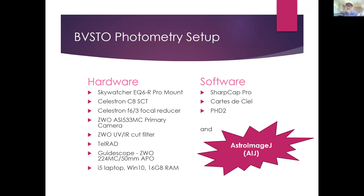There's a guide scope on the camera, useful for photometry doing longer exposures. There is a TELRAD as well, but all my target location is done by plate solving. It's all run from an i5 laptop. On the software side, I use SharpCap Pro for data capture, Cartes du Ciel as sky mapping software, PHD2 for guiding, and importantly for real-time photometry, I use AstroImageJ. These packages are basically free, with SharpCap Pro being the only paid one at a very modest annual price.